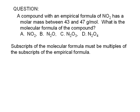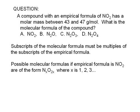Subscripts of the molecular formula must be multiples of the subscripts of the empirical formula. For a compound whose empirical formula is NO2, the possible molecular formulas are of the form NxO2x, where X is a counting number. Here are some possible molecular formulas: when X equals 1, we have NO2; when X equals 2, we have N2O4; when X equals 3, we have N3O6, and so on.